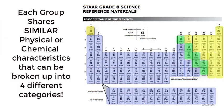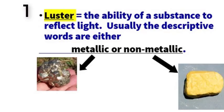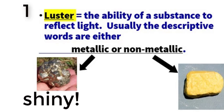Each group shares similar physical or chemical characteristics that can be broken into four categories. The first is luster. This is a substance's ability to reflect light. We usually say it is a metallic or shiny luster or a non-metallic or dull luster.